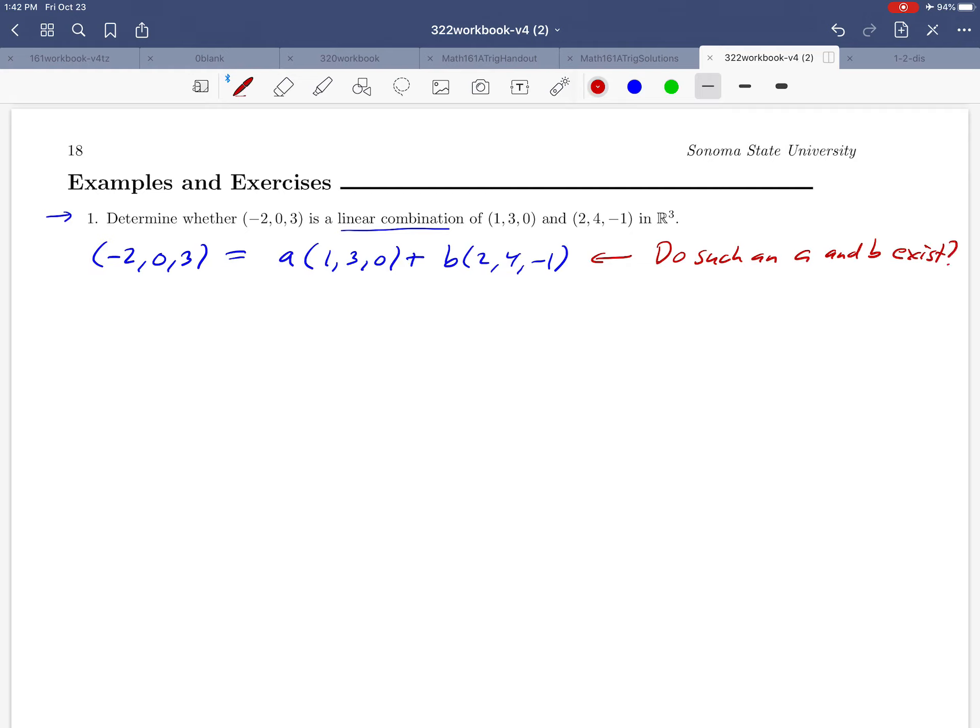Can we figure out what a and b would have to be so that that's a true statement, or is there maybe no such a and b that makes that work? Well, this kind of becomes an algebra problem. Let's simplify the right-hand side. So if we take everything and add it together on the right-hand side, we're going to get a + 2b in the first coordinate, and then 3a + 4b in the second coordinate. And then finally, a times 0 plus b times -1, that's going to be -b. All we're doing is multiplying the a and the b through, and then adding everything up.